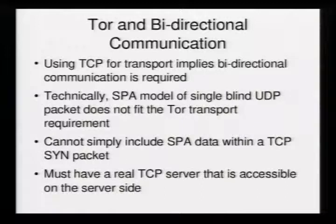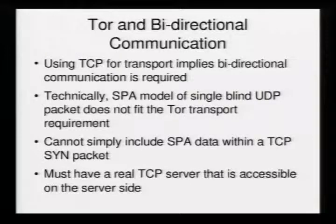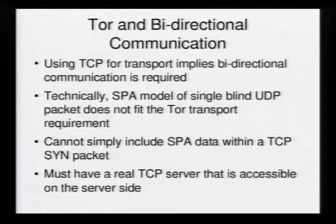Tor using TCP for transport means we must have bidirectional communication for data to be transmitted across the network. That means this is technically incompatible with single packet authorization. There will be at least three packets for the TCP three-way handshake, followed by a packet to send the actual data, followed by the FIN to close the TCP session. We can't include SPA data within a send packet over the network because we can't permute how the TCP stacks on those operating systems are functioning.